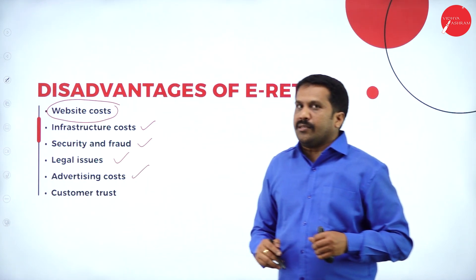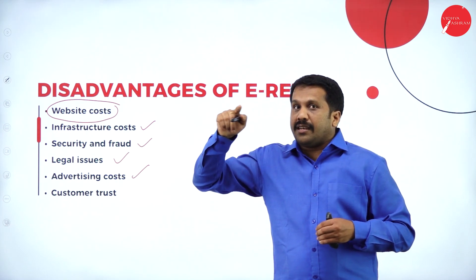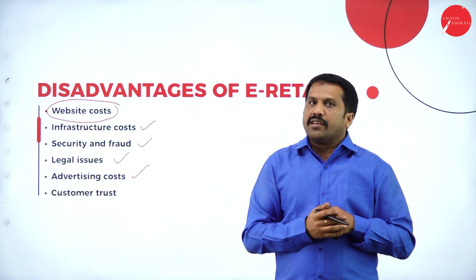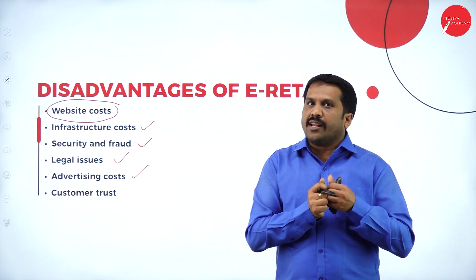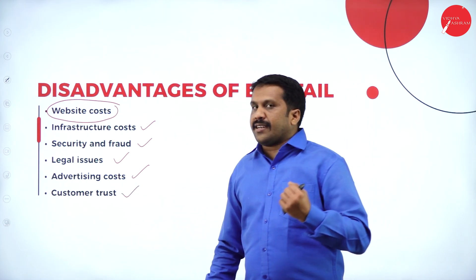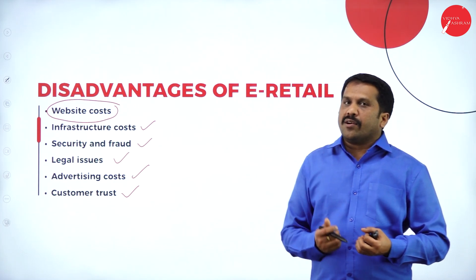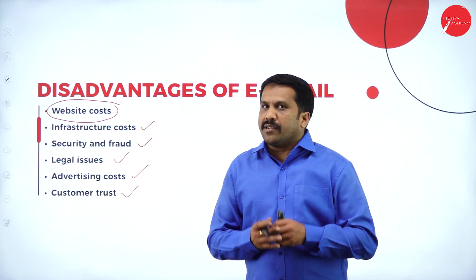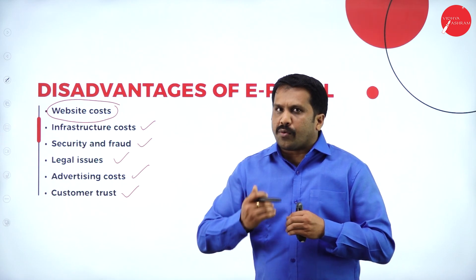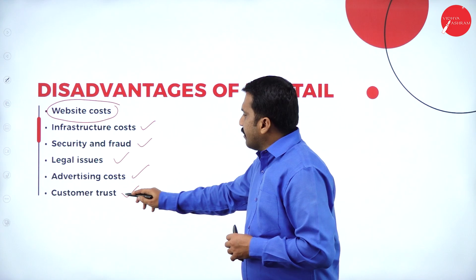Advertising cost — on Amazon and Flipkart, you see million-day offers. These have to be posted on roads and on social media like Instagram and Facebook, and you have to pay for that. Customer trust — holding customer trust is not easy. You bought something from Amazon, the product is really good, you trust Amazon. Once you get a poor quality product, you will stop trusting Amazon. That is what is called customer trust.